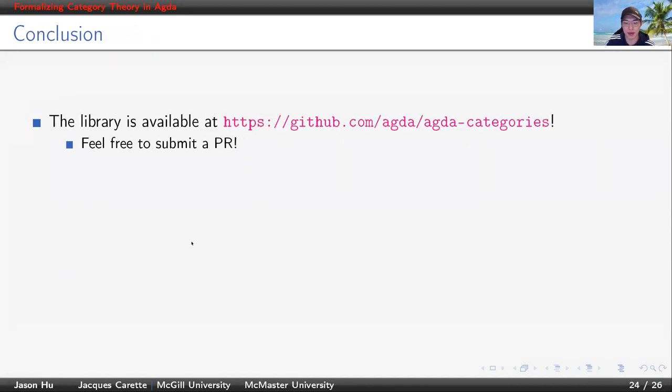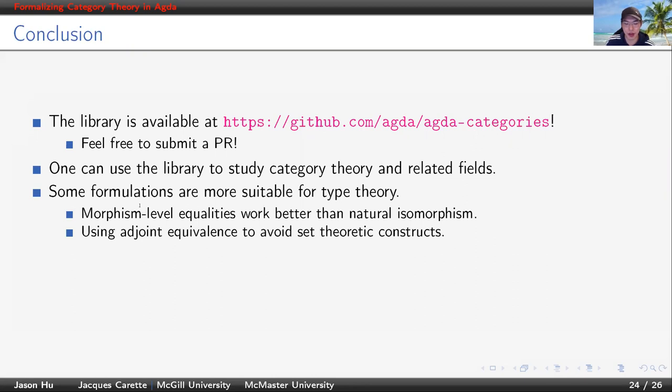Here comes the end of the talk. If you're interested in our work, you can find the link here. If you want to contribute, please feel free to submit a PR. You can use this library to study category theory itself and probably do something with it. As an example, I showed simply typed lambda calculus is a Cartesian closed category. It was quite easy. A lesson we learned is that some formulations work better in type theory. In particular, we prefer morphism level equalities to natural isomorphisms.